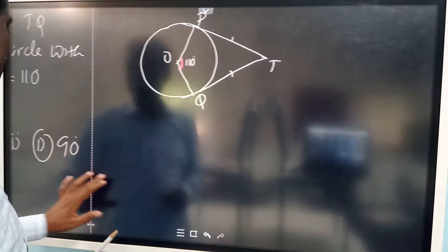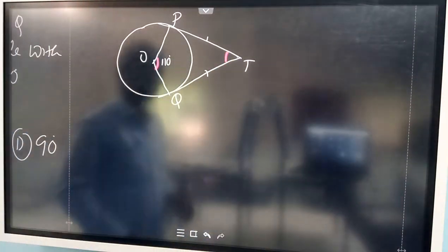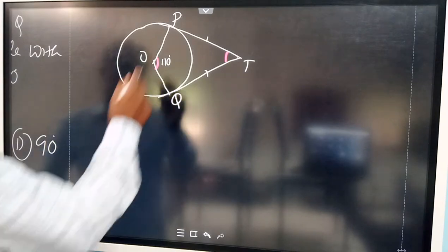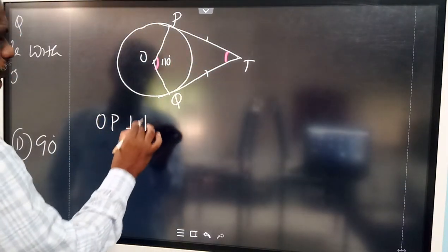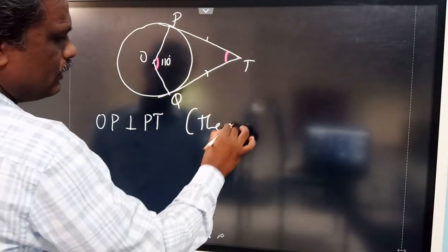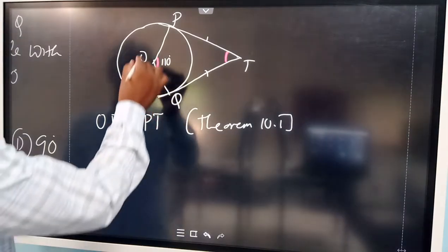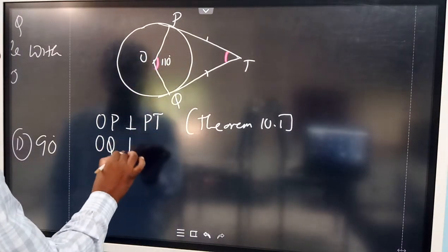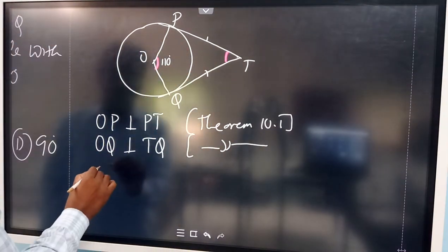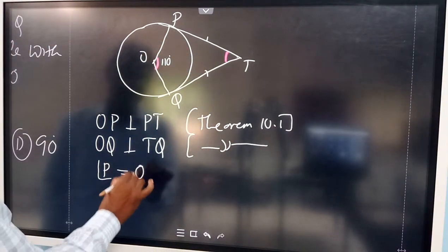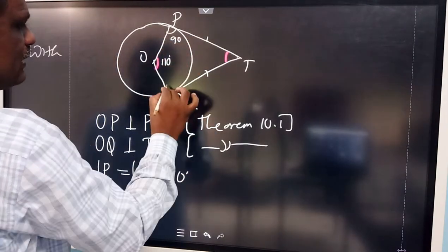By Theorem 10.1, OP is perpendicular to PT, and OQ is perpendicular to TQ. Therefore angle OPT = angle OQT = 90 degrees.